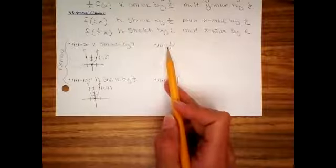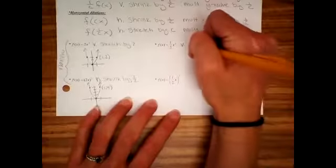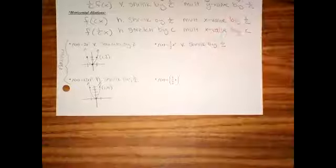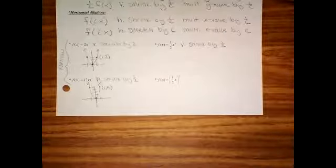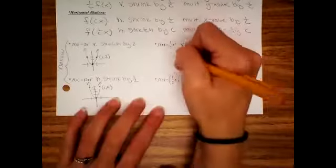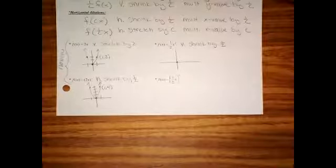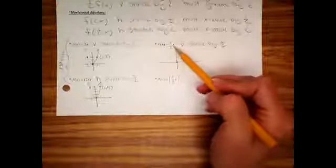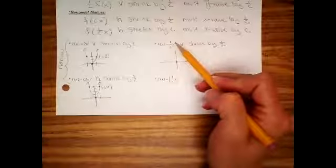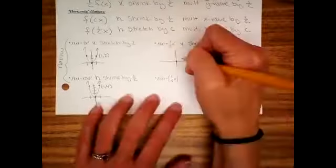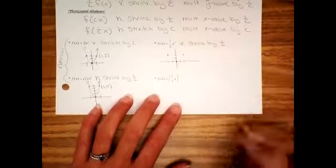For (1/2)x², the one-half is outside — decide that first — so it's vertical. Vertical stretch or shrink? It's a vertical shrink by one-half, like an elephant sat on your graph. Plugging in x = 2: 2² = 4, then half of 4 = 2. So we get the point (2, 2).